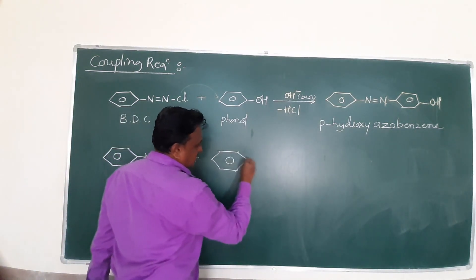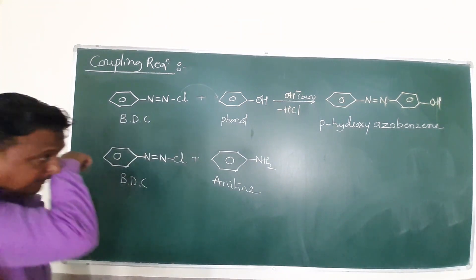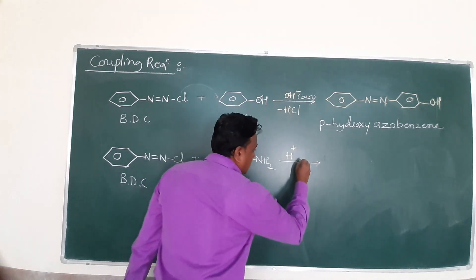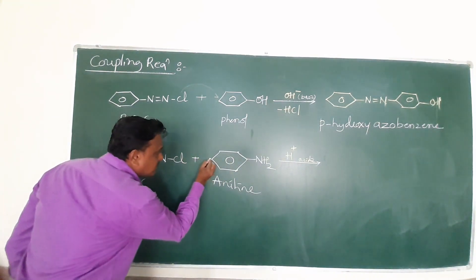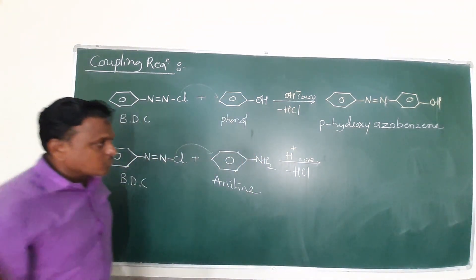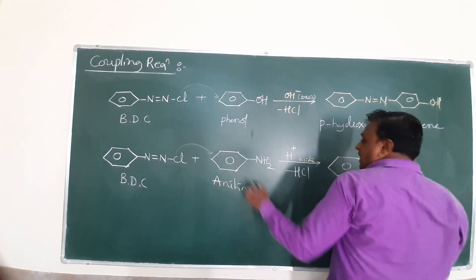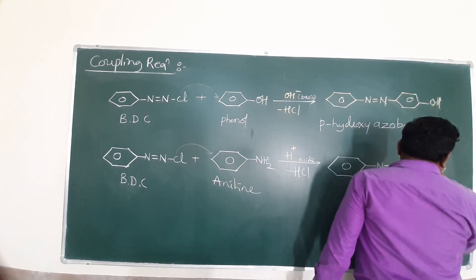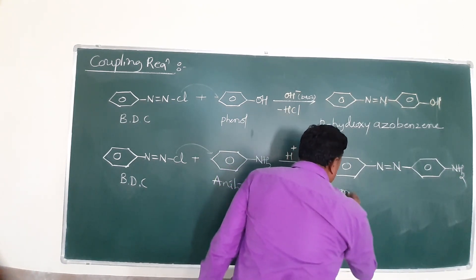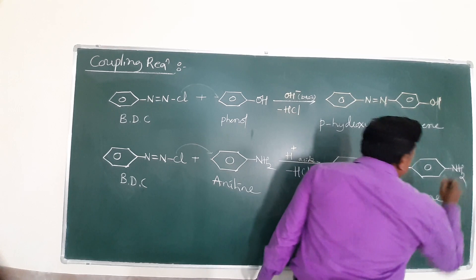In the second coupling reaction, BDC reacts with aniline. Since aniline is a base, an acidic medium is required to neutralize it. In acidic medium, the diazonium compound combines with aniline to form an azo compound. The product formed is para-aminoazobenzene. So para-aminoazobenzene comes from BDC reacting with aniline in acidic medium.